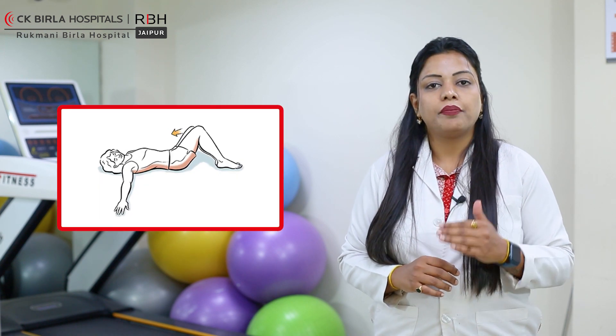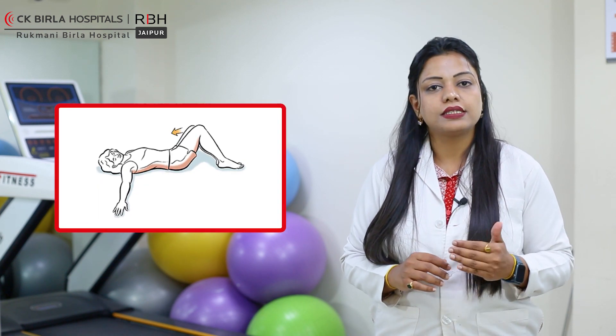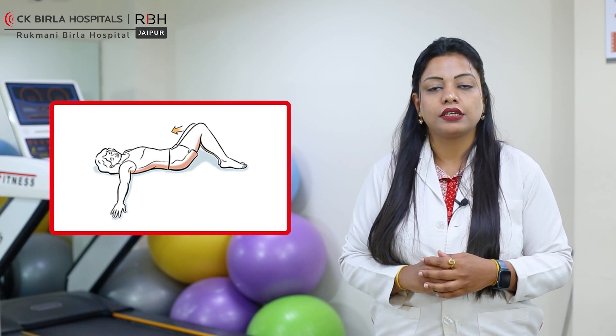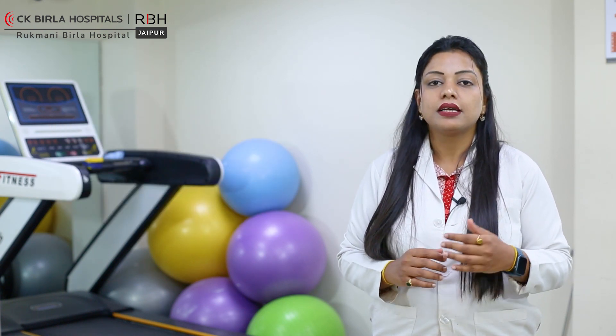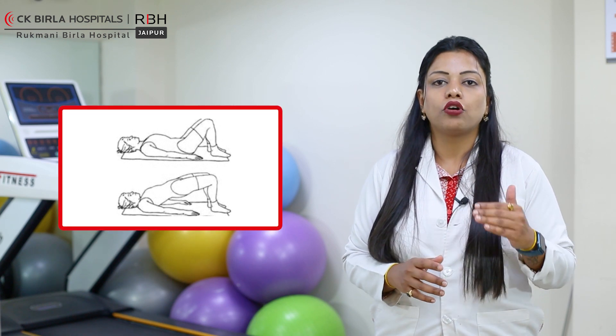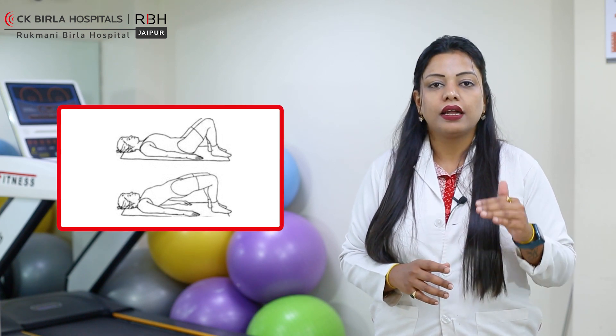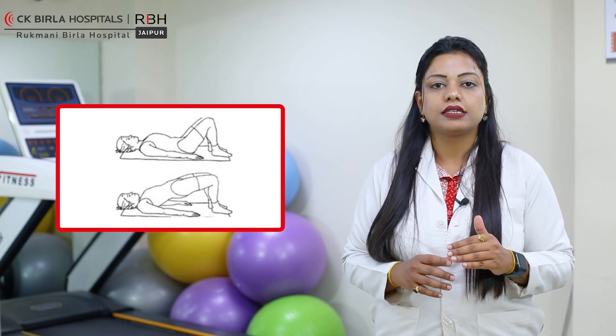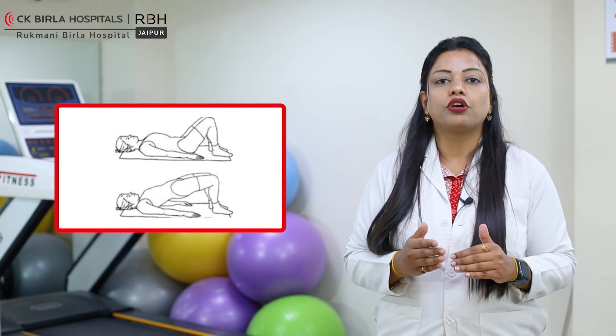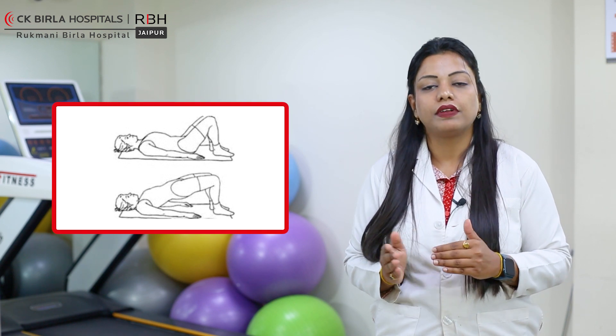You can also perform lumbar rotation or side twisting. Simply lie down on a bed, bend both knees, and twist them in a sideways direction. You can also perform pelvic tilt exercises — bend your knees, flatten your back in a downward direction, and tilt your hip in the upward direction.